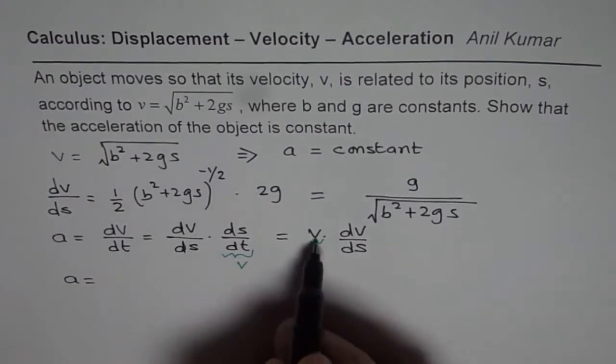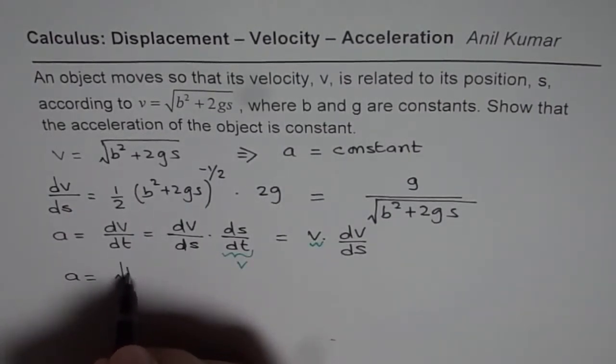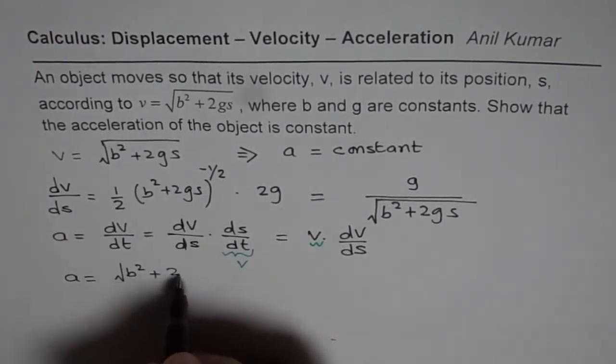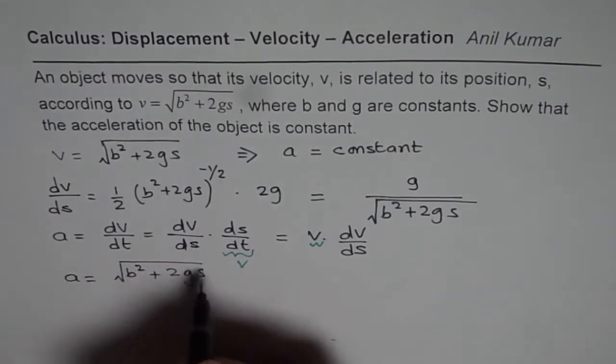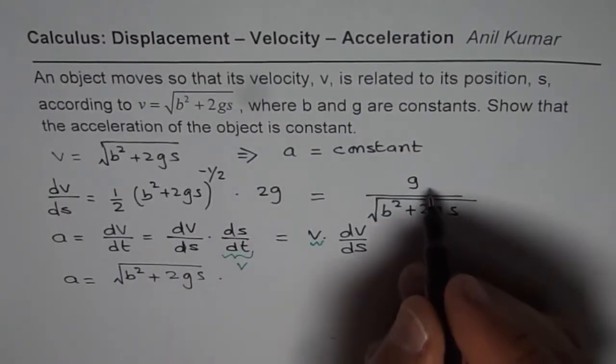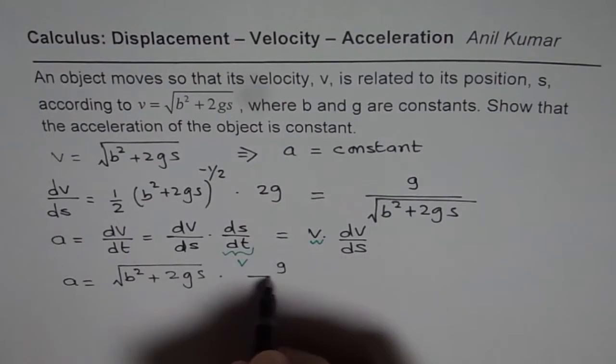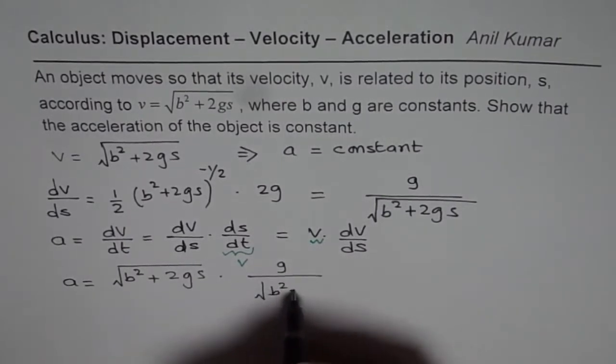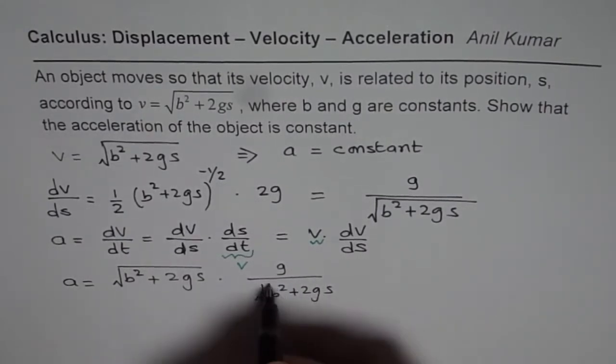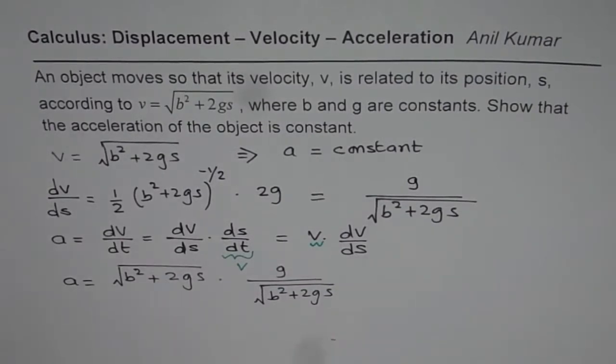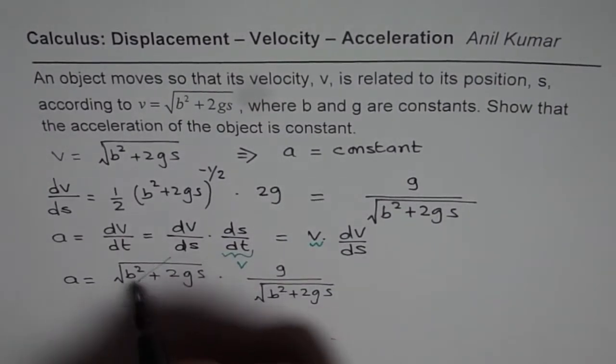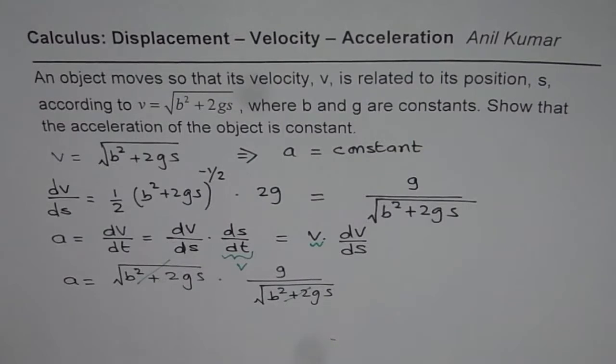So a is velocity, which is √(b² + 2gs), times dv/ds, which is given here as g/√(b² + 2gs).